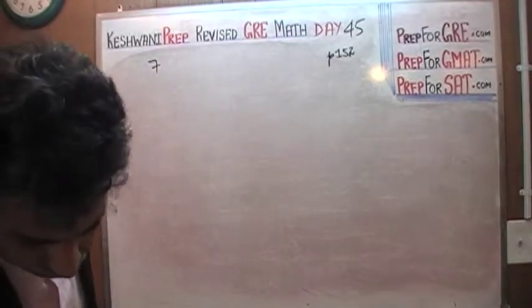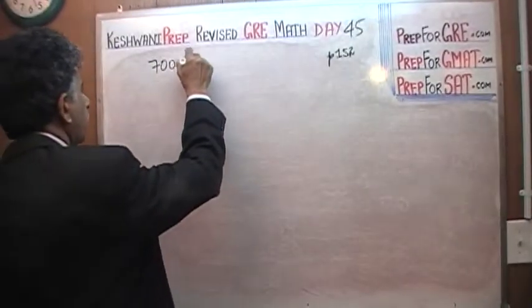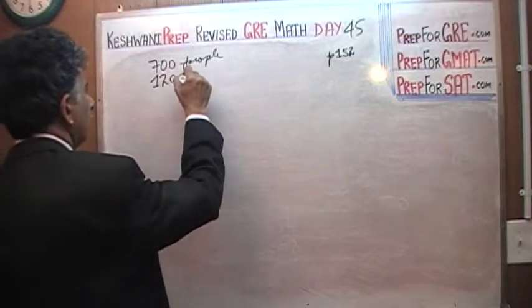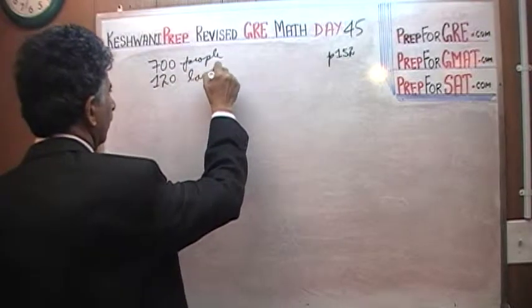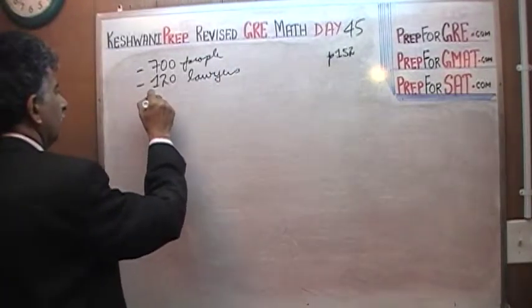So we have 700 lawyers - or do we? We have 700 people, of which 120 are lawyers. We're going to pick two at random.